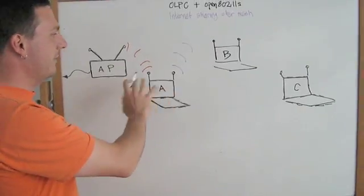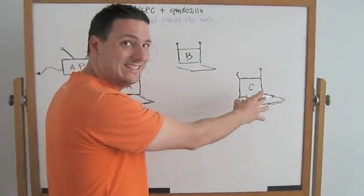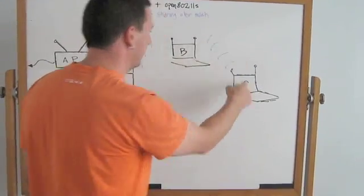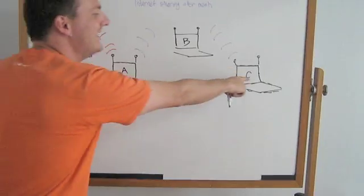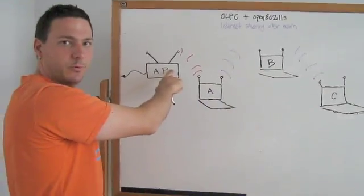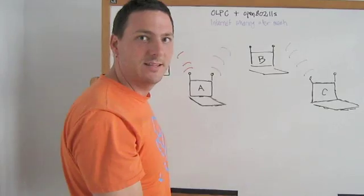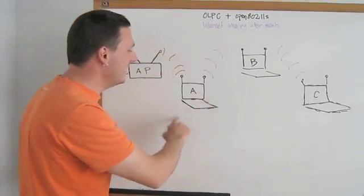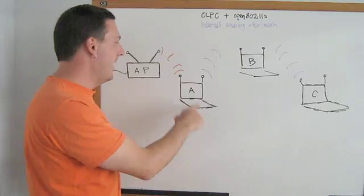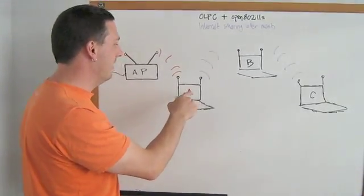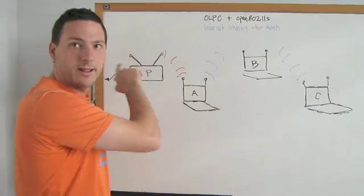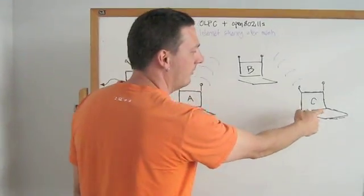After we've established this mesh network, when we turn on C, it's going to join into this mesh network so it can talk to A. But it's not going to be associated with the access point, so it's not going to have any access to the internet. But because we set A up as a mesh router, A will forward the traffic on behalf of C to the internet, and we'll be able to ping an outside node from C.